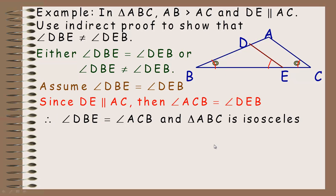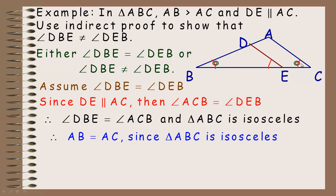Since those two angles are the same, triangle ABC must be isosceles, because an isosceles triangle has two equal angles. And here comes the contradiction: in an isosceles triangle, the sides opposite the equal angles are equal. AB is opposite one angle and AC is opposite the other, so those two sides would have to be equal.